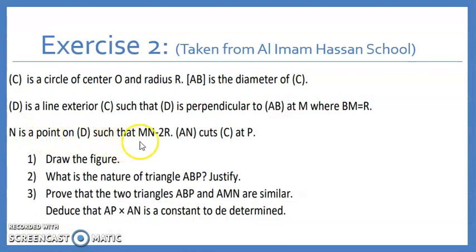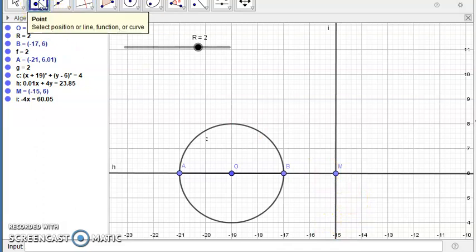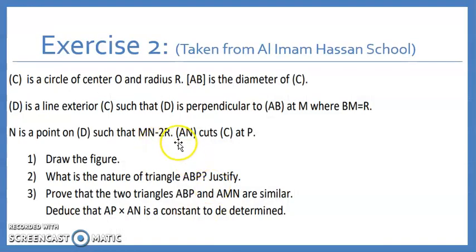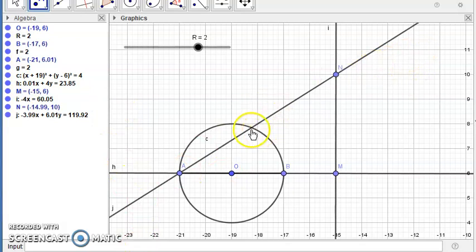N is a point on D such that MN is equal to 2R. So let's place N. So MN should be equal to 2R. So it's either here or downwards, but they didn't specify. So you can place it wherever you want. So this is N. So MN is 4cm because I took the radius 2cm here. And now finally AN cuts C at P. So let's draw the line AN. This is AN. So P would be here, the intersection of the circle and the line.